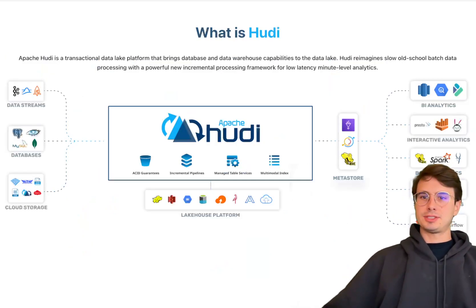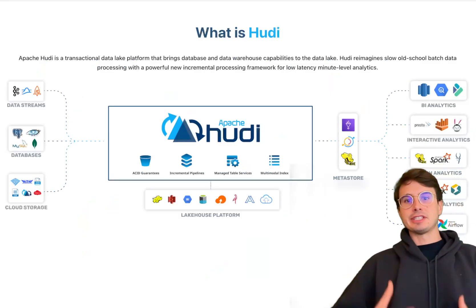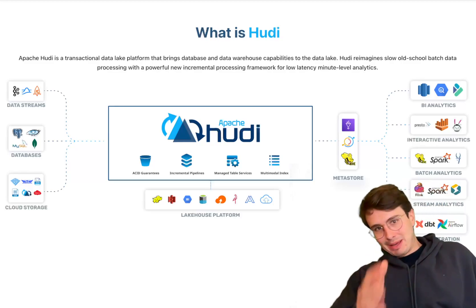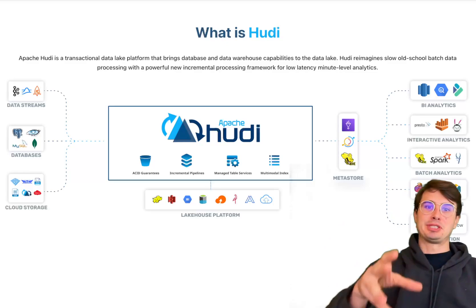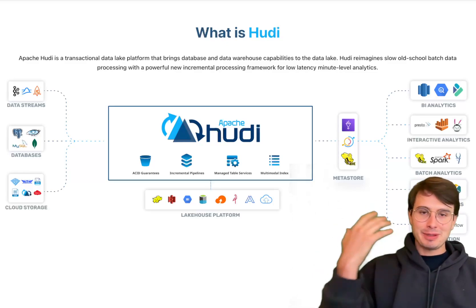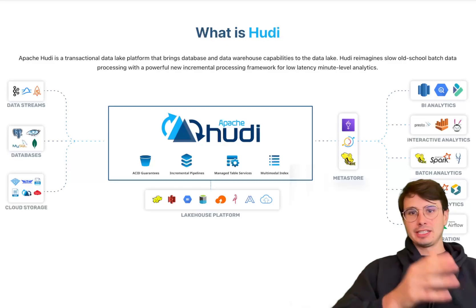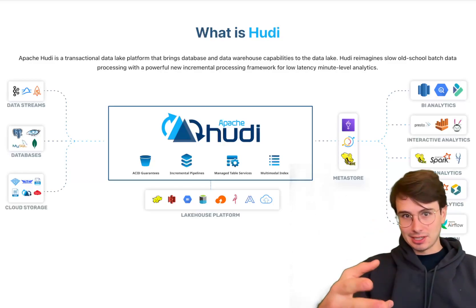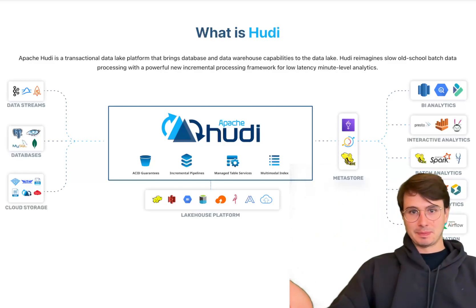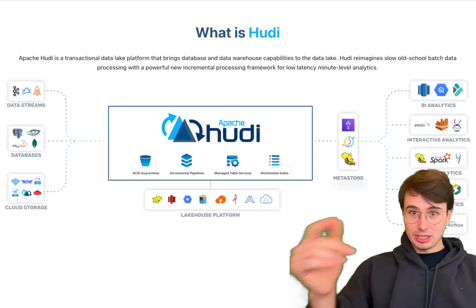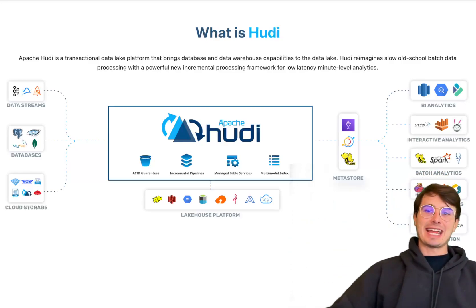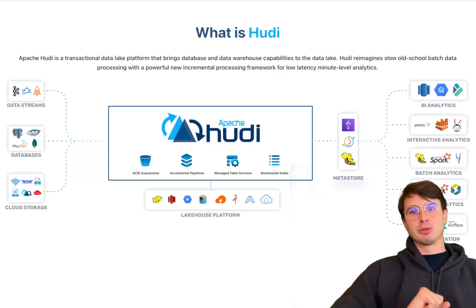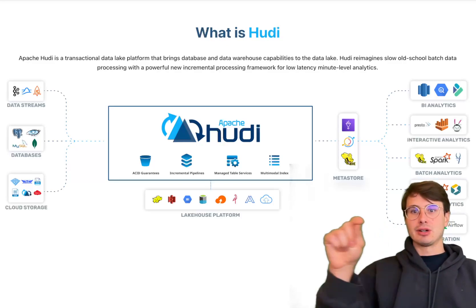First, I want to break down the key features of how Apache Hudi is architected. Apache Hudi actually stands for Hadoop, Upsert, Delete, and Incremental. It's designed around managing and processing data in a data lake with support for record-level operations like inserts, updates, and deletes. To support this, Hudi enables efficient change data capture and real-time stream processing by providing two key table types: copy-on-write tables and merge-on-read tables.